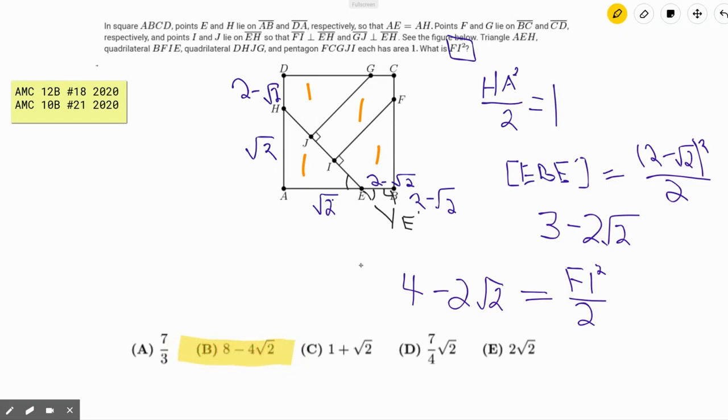And so we select B as our answer, because 4 minus 2√2 times 2 is 8 minus 4√2.